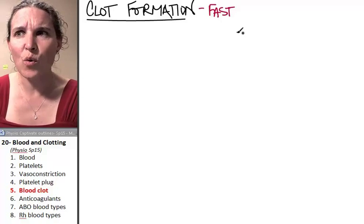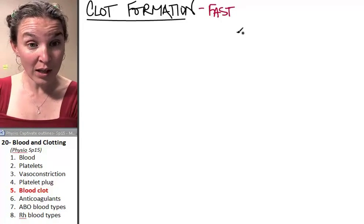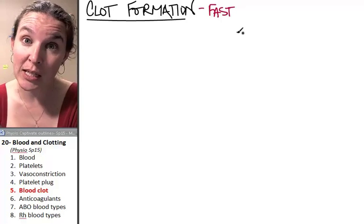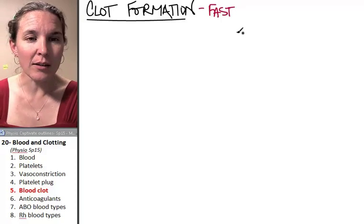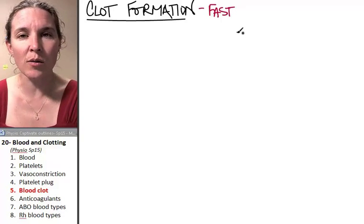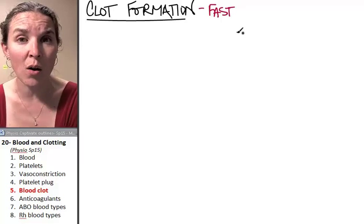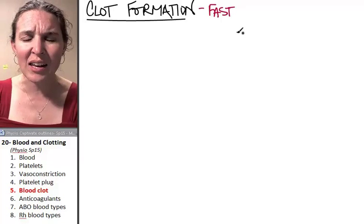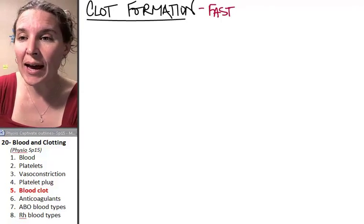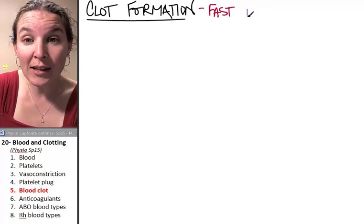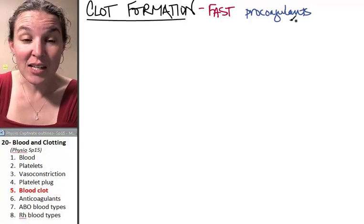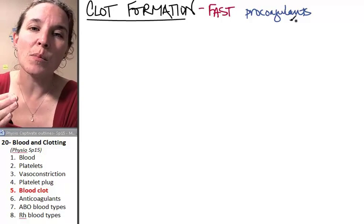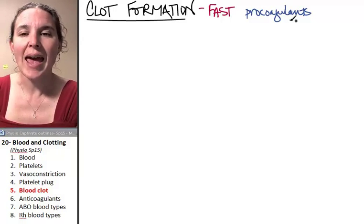Those who can form clots faster are more likely to stop the bleeding. But if you form clots too fast, you're likely to be a done deal dead doggy on the ground because your blood will clot all the way up. At any given time, you have pro-coagulants in your blood.